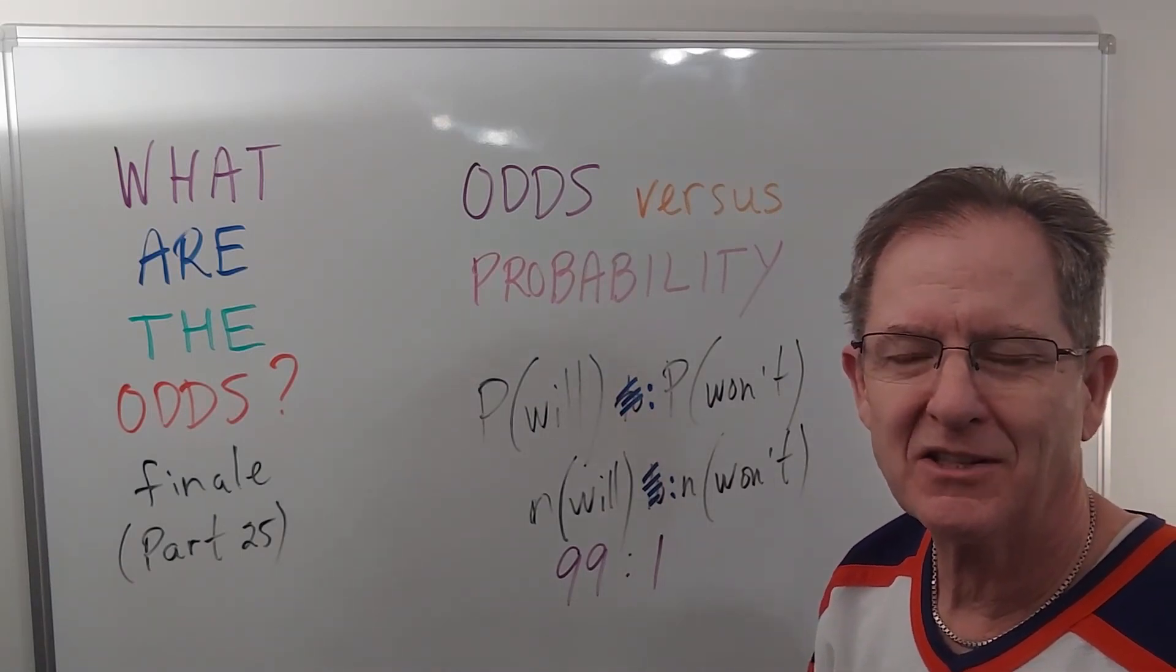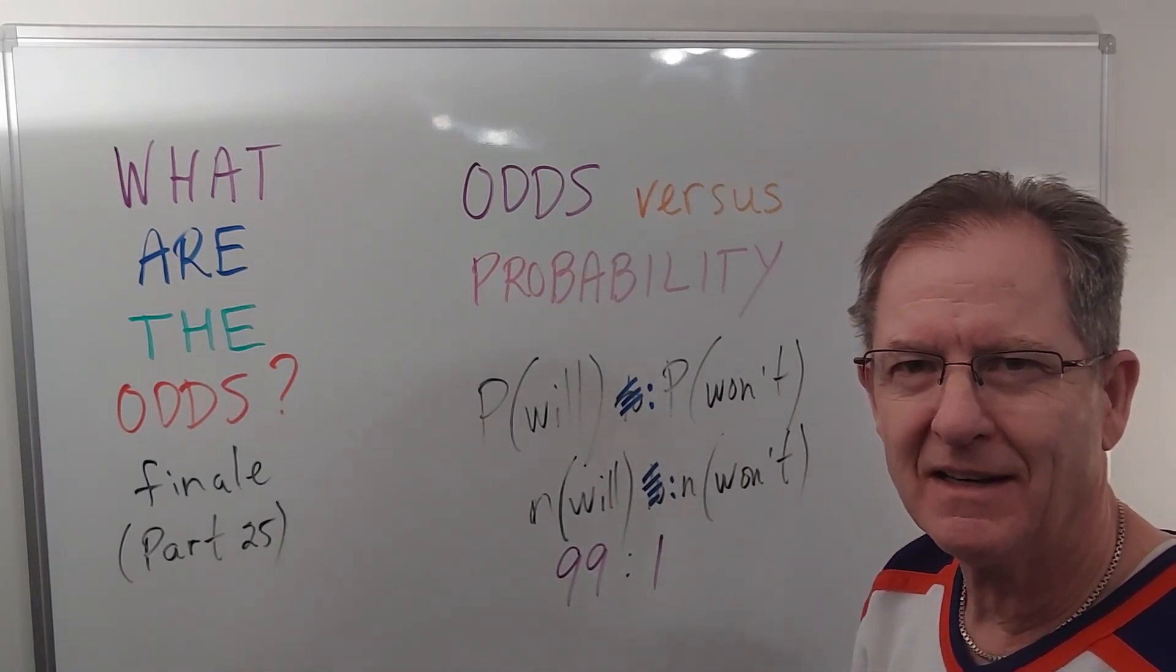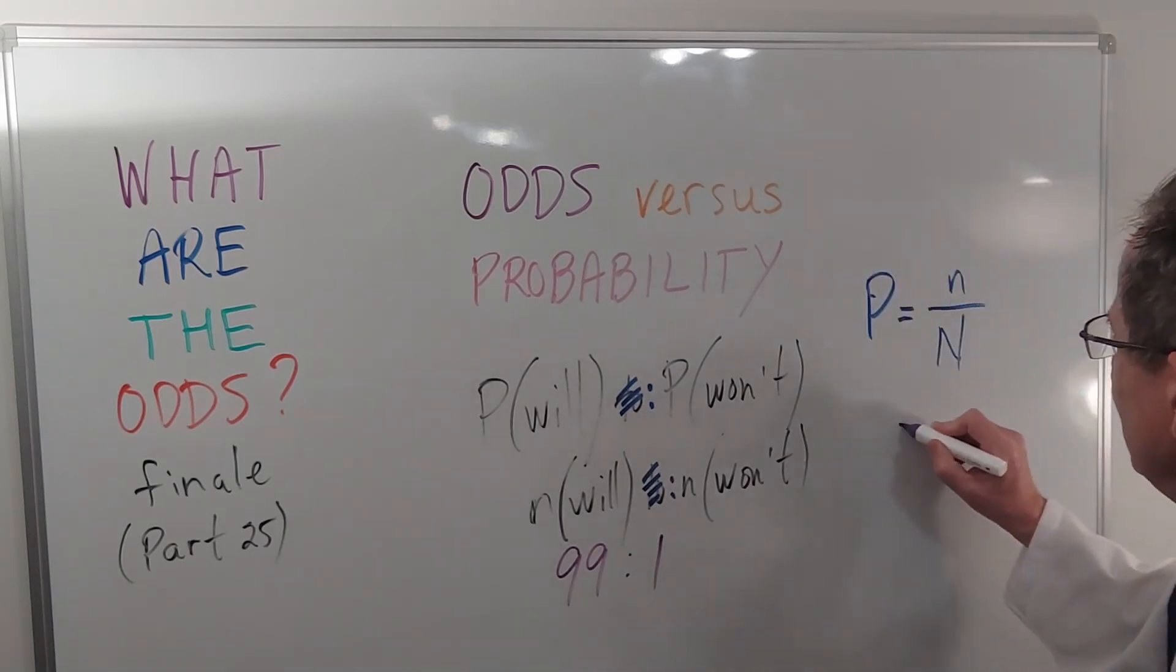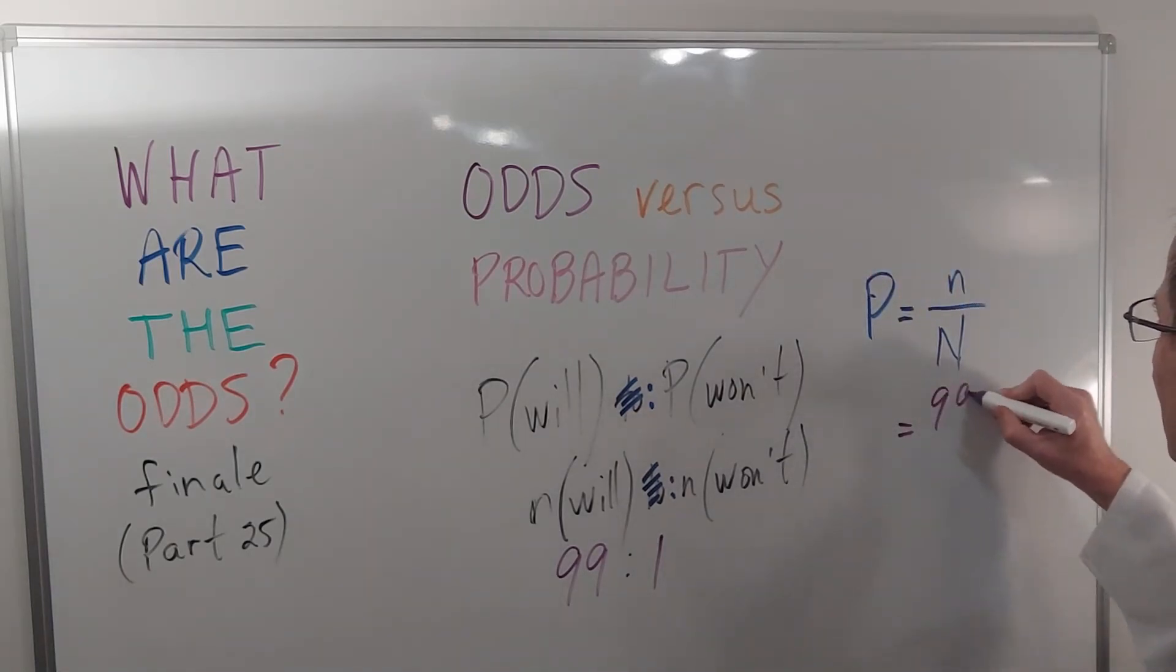Now that might be a slight exaggeration, but of course I'm picking 99 because of the jersey. The probability would be 99 out of 100.